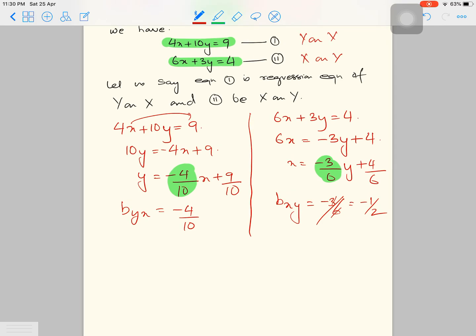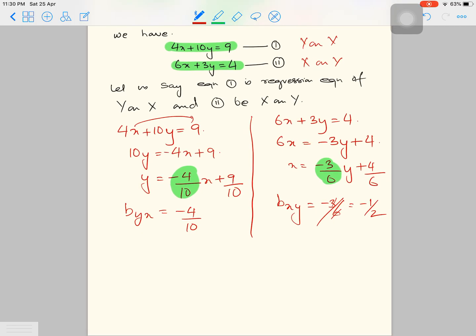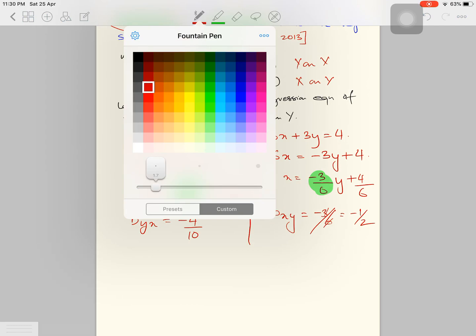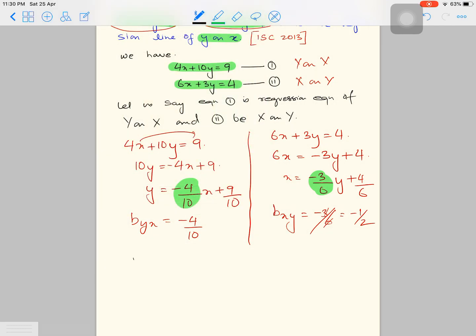Since we have obtained b_yx and b_xy, we will put it to test whether our assumption is correct or not. For that we multiply b_yx and b_xy, because as you all know, if we multiply these two and if we get the product less than or equal to 1, then our assumption will be correct.